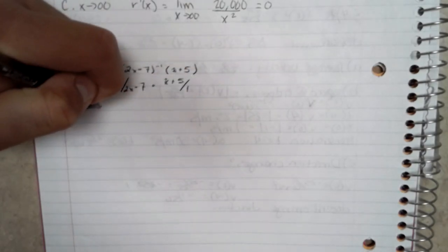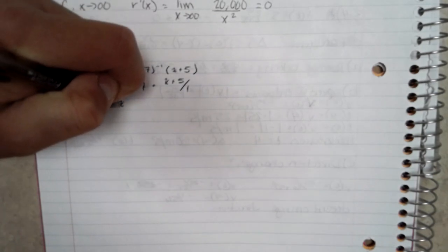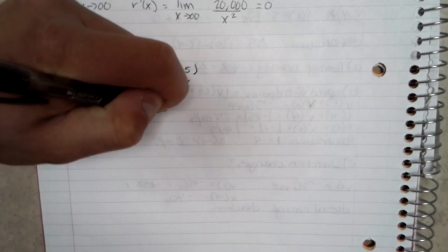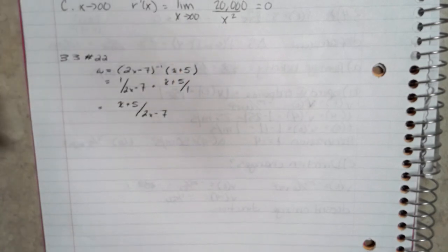And then I worked to plug them out, so (x plus 5) divided by (2x minus 7).